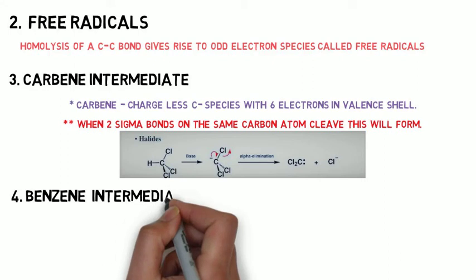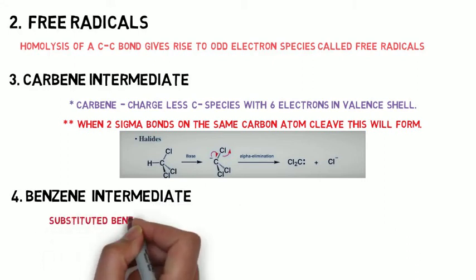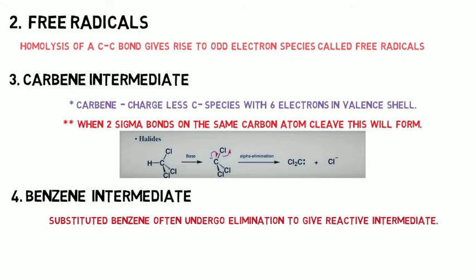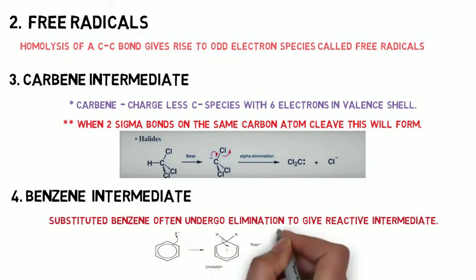The next one is benzene intermediate. Substituted benzene often undergo elimination reaction to give reactive intermediate. In this example stated there is an unstable intermediate produced.